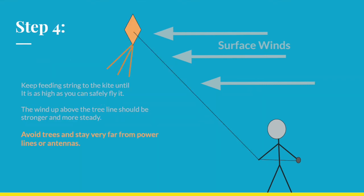As you feed more string to your kite, it should get caught in winds that are higher up by the tree line. These winds are stronger and more steady, and you should be able to fly your kite with little issue.